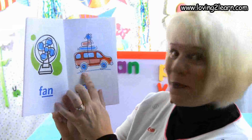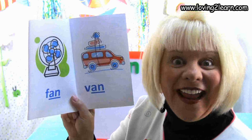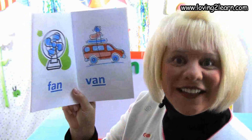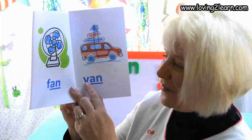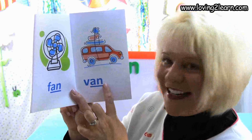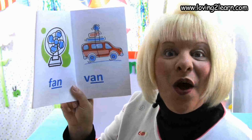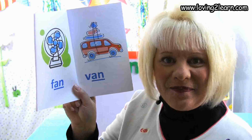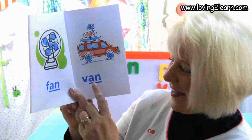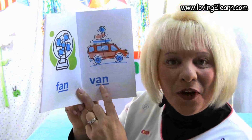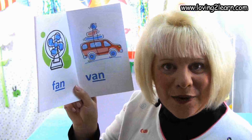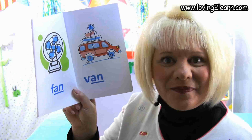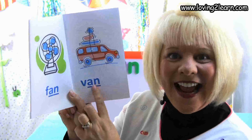Here's a picture of a van. Here's the word van. Let's spell the word van: V-A-N. Where do you see the AN chunk in the word van? That's right, right at the end of the word. What sound does the AN chunk make? An, an, an.